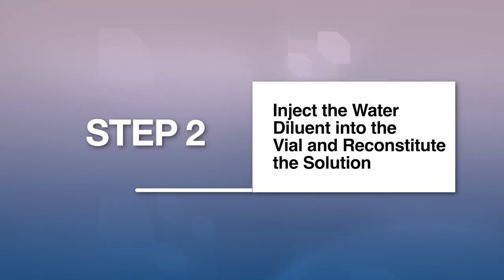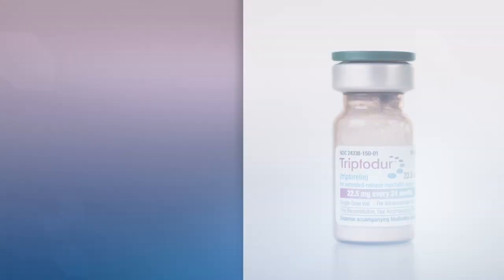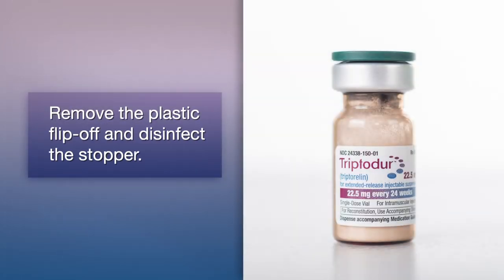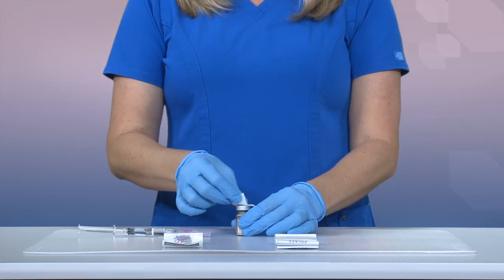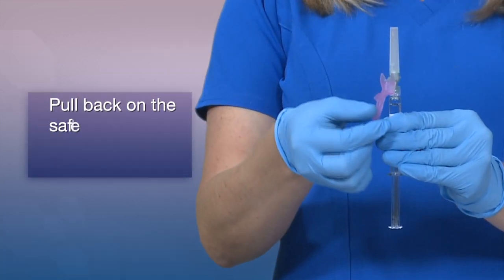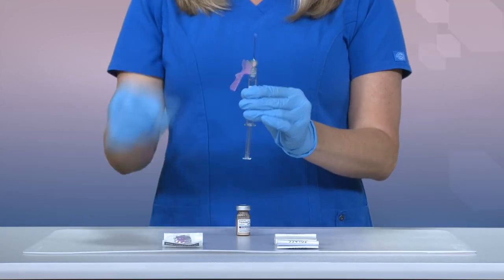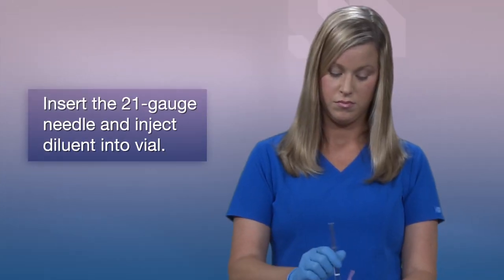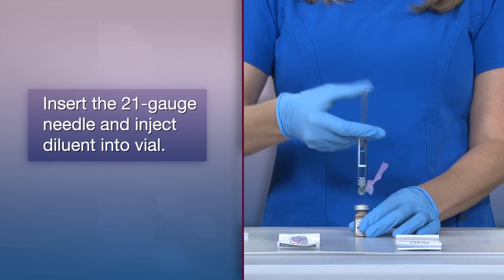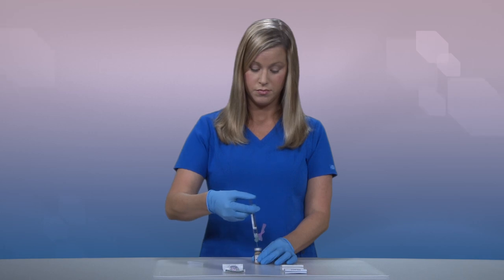Step 2: Inject the water diluent into the vial and reconstitute the solution. Remove the plastic flip-off from the vial and disinfect the visible part of the stopper. Next, pull back on the safety cover toward the syringe and away from the 21-gauge needle. Then pull the clear needle shield off. Once you remove the needle shield, insert the 21-gauge needle through the stopper. Inject the sterile water diluent into the vial, ensuring the diluent rinses the sides of the vial.